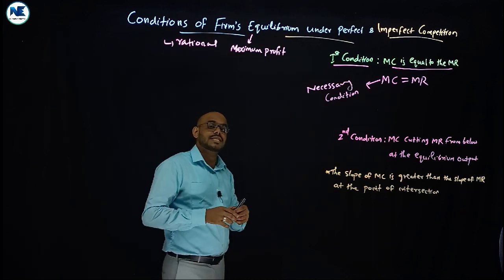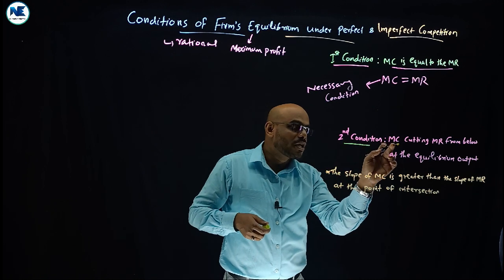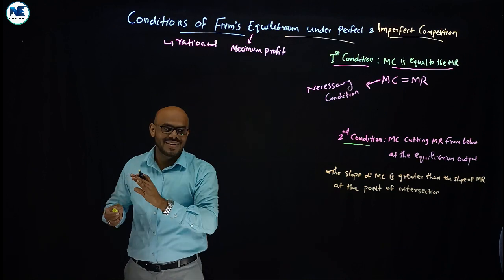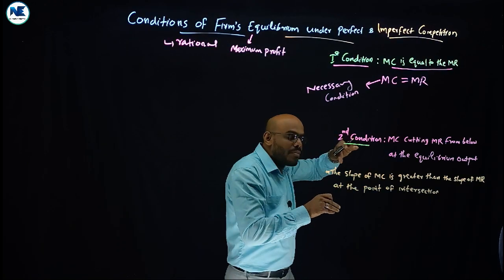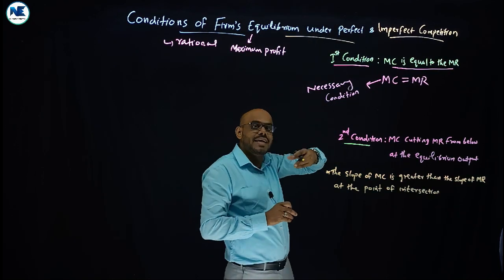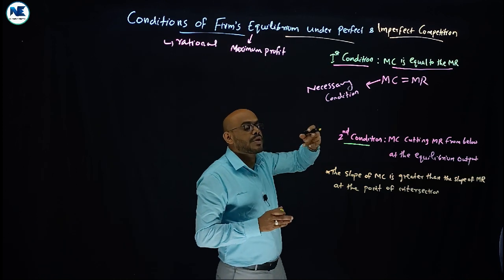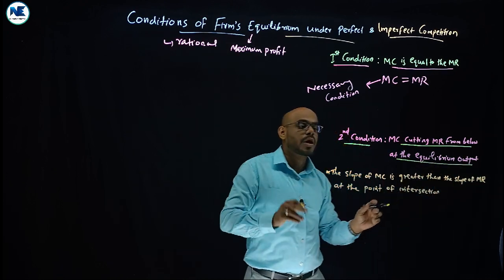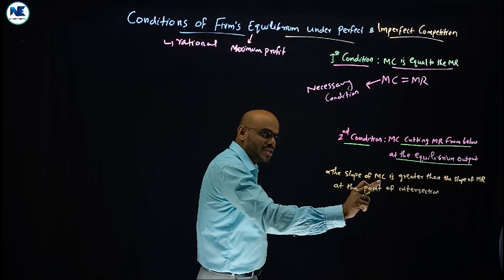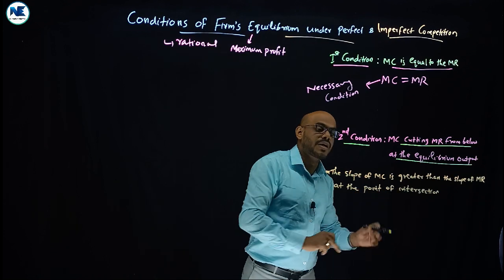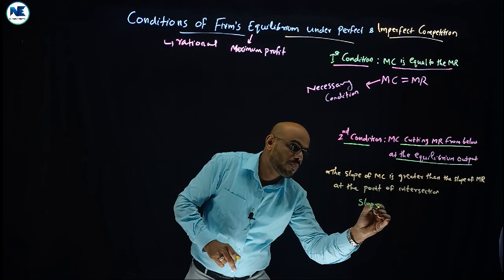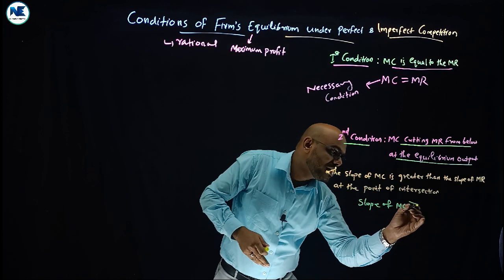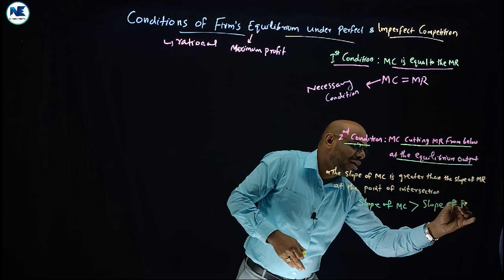We need to satisfy the second condition: marginal cost must cut marginal revenue from below at the equilibrium output — not from above, but from below. This means the slope of marginal cost must be greater than the slope of marginal revenue at the point of intersection. In other words, the MC curve must be more steep than the MR curve at the equilibrium point.